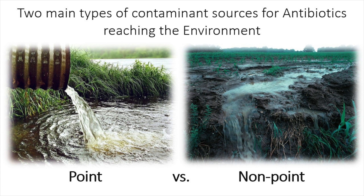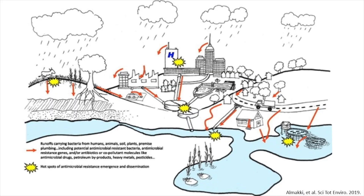Going right into it — antibiotics and how they're reaching the environment. There are really two main contaminant source types: point and non-point sources. This next diagram does a great job showing a bunch of different point and non-point sources. The little yellow bursts show where the hotspots of antibiotic resistance are forming or disseminating.